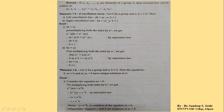Proof of right cancellation law: given BA = CA. Post-multiplying both sides by A inverse: BA · A inverse = CA · A inverse. By associative law: B · (A · A inverse) = C · (A · A inverse). By definition of inverse, A · A inverse = E. So B·E = C·E, which gives B = C. This completes both the left and right cancellation laws.